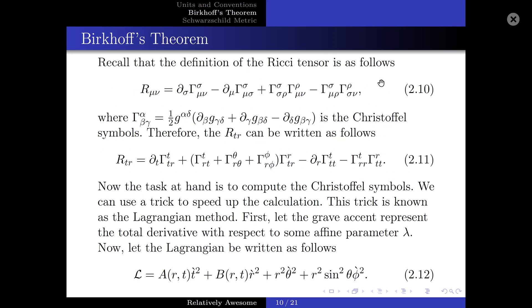Recall that the definition of the Ricci tensor is as follows, where gamma is the Christoffel symbol. Therefore, R-TR can be written accordingly. The task at hand is to compute the Christoffel symbols using the Lagrangian method. Let the grave accent represent the total derivative with respect to some affine parameter. Let the Lagrangian be written as follows — just remember that the dt, dr, d-theta, and d-phi terms appear in the Lagrangian.